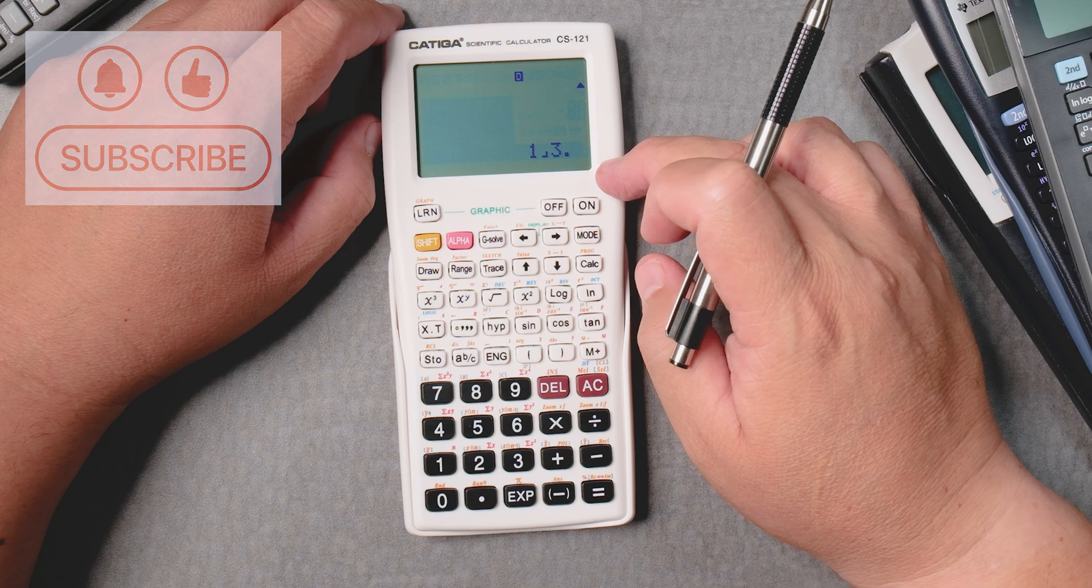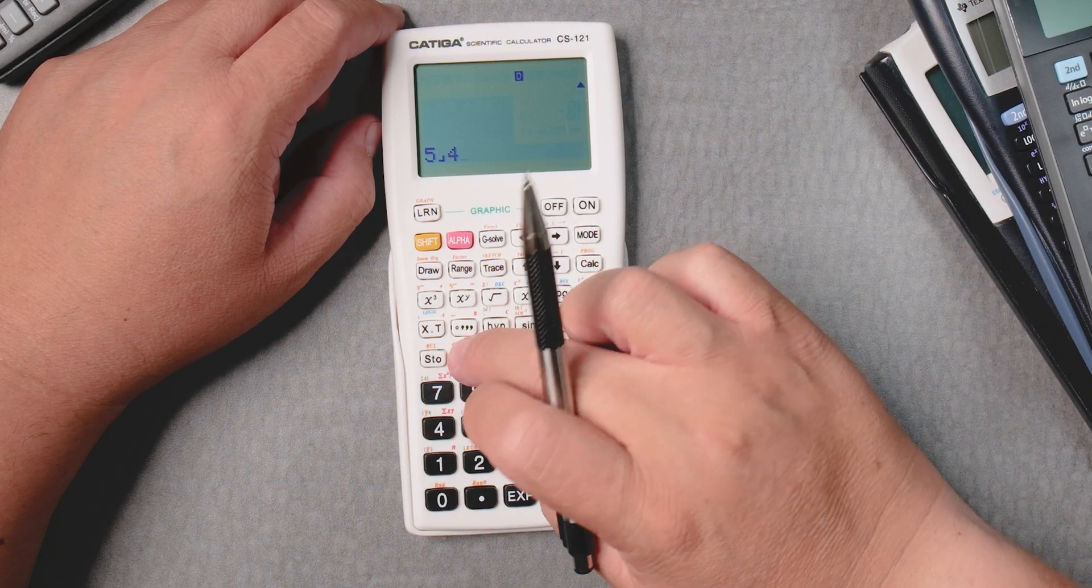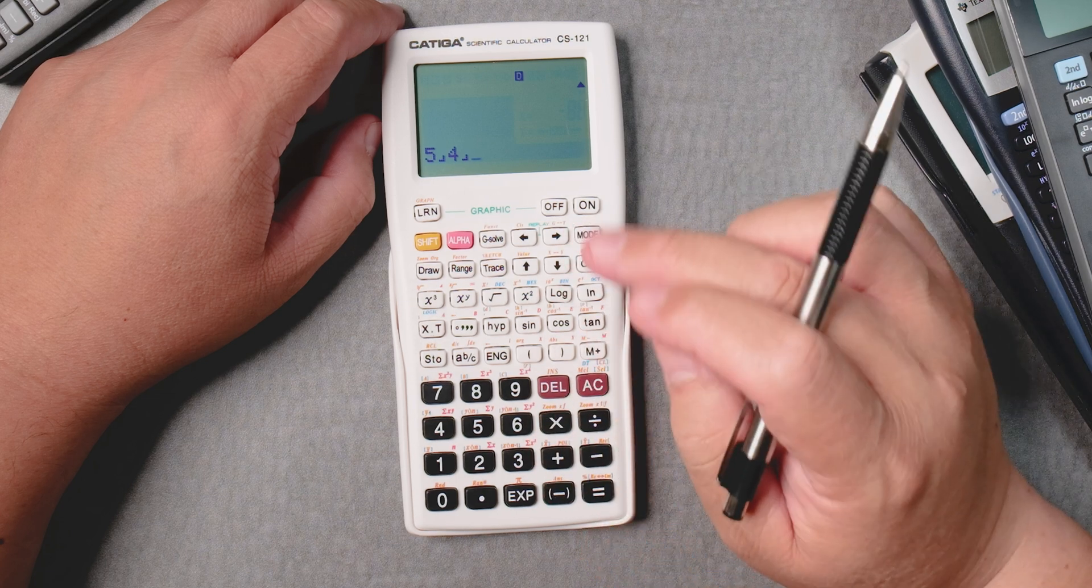Let's say you want to do a mixed number. You want to add 5 and 1/4. Press 5, ABC, 4, ABC. Or 1/4, I said.